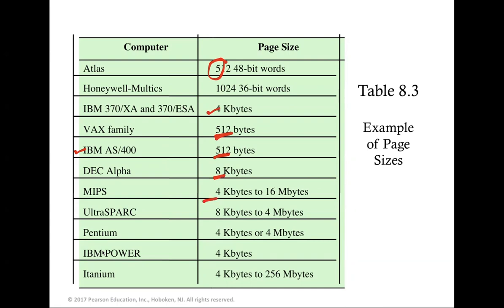Different machines use different page sizes: Atlas uses 548-bit words, IBM 370 uses 4 KB, IBM AS/400 and VAX use 512 bytes, DEC Alpha uses 8 KB, MIPS ranges from 4 KB to 16 MB, UltraSPARC ranges from 8 KB to 4 MB, IBM Power uses 4 KB, and Itanium uses 4 KB to 256 MB.